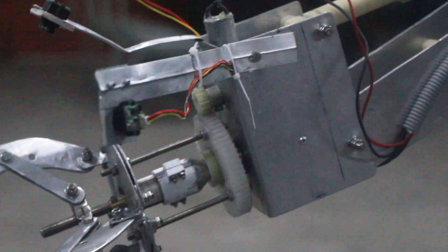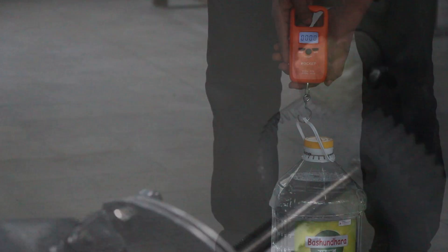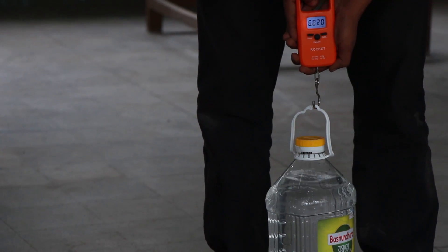The manipulator of the rover has 6 degrees of freedom with infinite rotation of the end effector using DC jack mechanism. It can lift weights up to 7 kg with great stability.